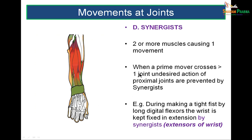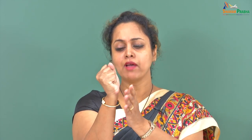Synergists: one muscle cannot always create a desired movement alone, so two or more muscles work together. When a prime mover crosses more than one joint, it could have an undesired action on another joint — this is controlled by a synergist. For example, when making a tight fist, the wrist must be slightly extended. The prime movers are the finger flexors, and the synergists are the wrist extensors, which keep the wrist extended to allow the fingers to clasp tightly.